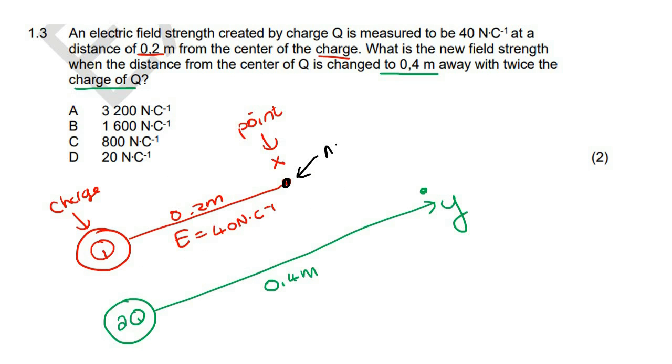So we know that this is a random little point. This over here is not a charge. Many learners think that this is a charge. That is not a charge. That is just a random point or a place. That's just a random place.